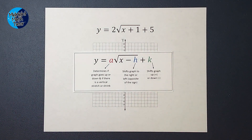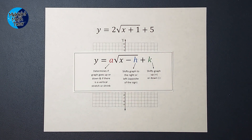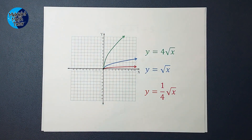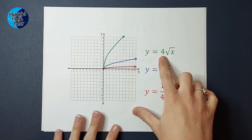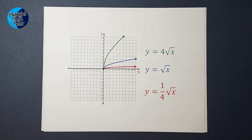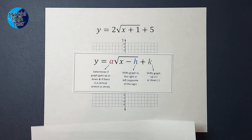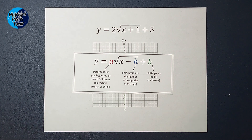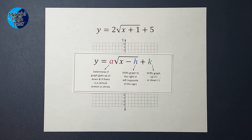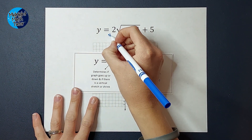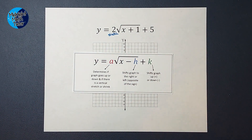If there's a number out front like there is on this one — represented by 'a' here — we have a 2. That number is going to either stretch or compress my graph. The blue is the parent graph. The green has a 4 out front and is stretched. The red has a fraction out front and is compressed. So this one having a 2 out front, we know it's going to be stretched a bit more than our parent graph. Also, if there is a negative there — there's not in this one — it would flip our graph down. So I'll just make a note: this graph is going to be stretched.